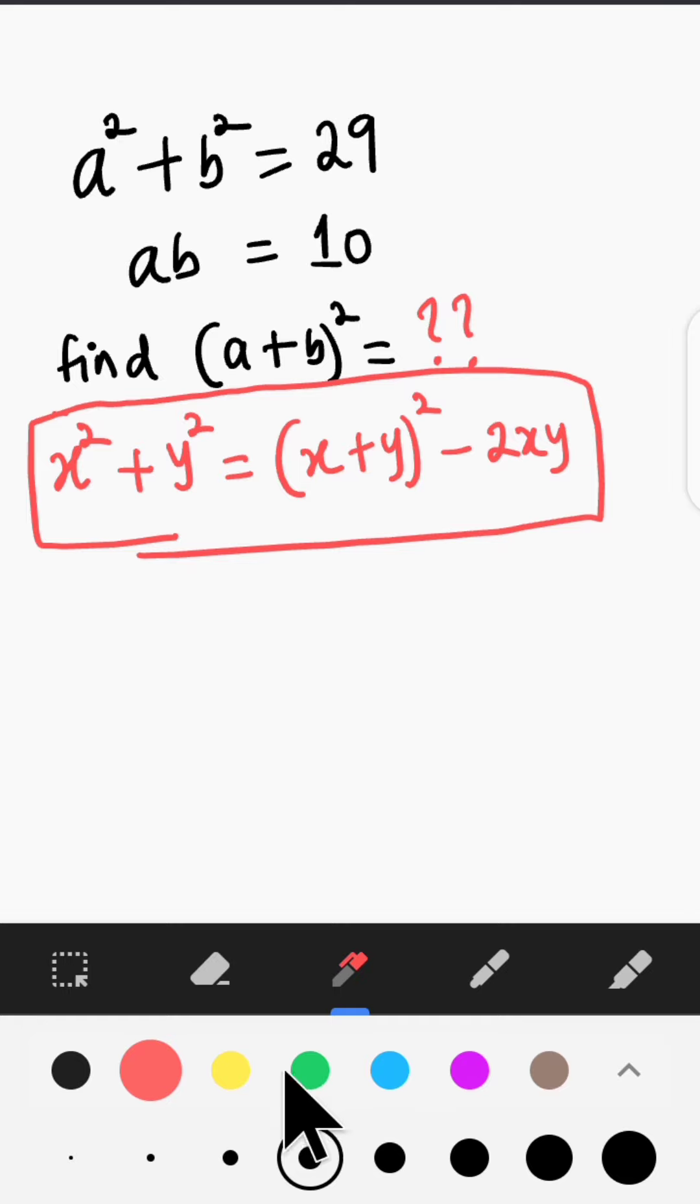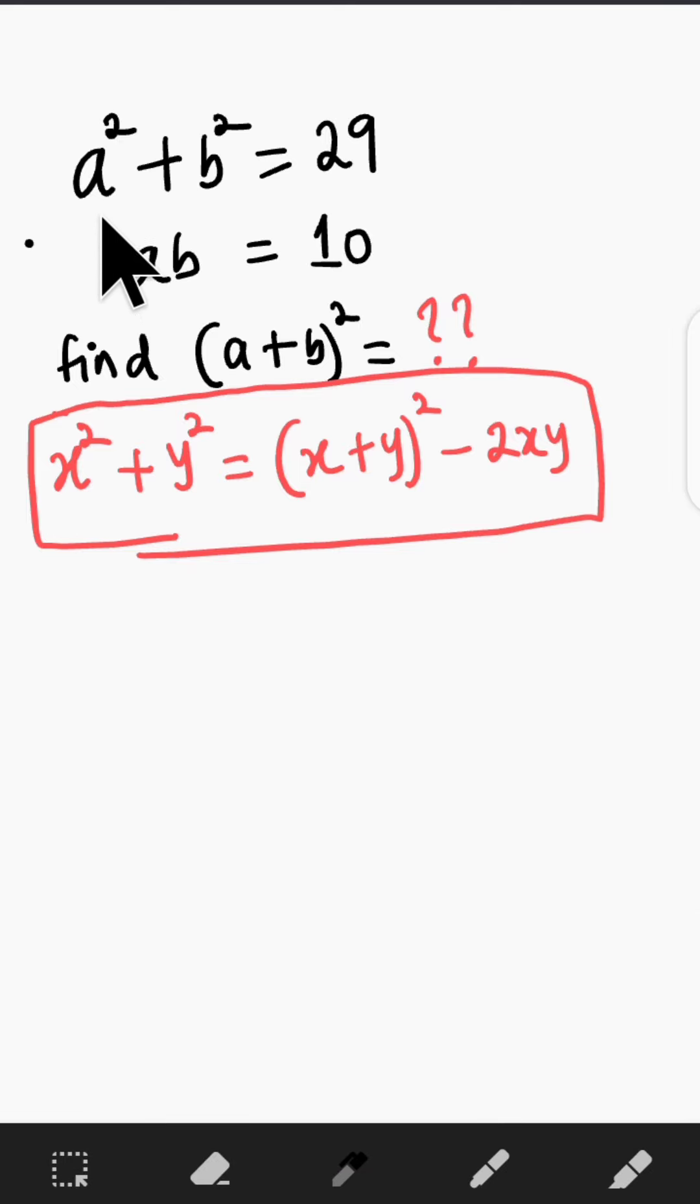All right, let's get started. To solve this problem, this sum of squares becomes a plus b all squared minus 2ab, and that of course is equal to 29. I believe you understood what we just did.